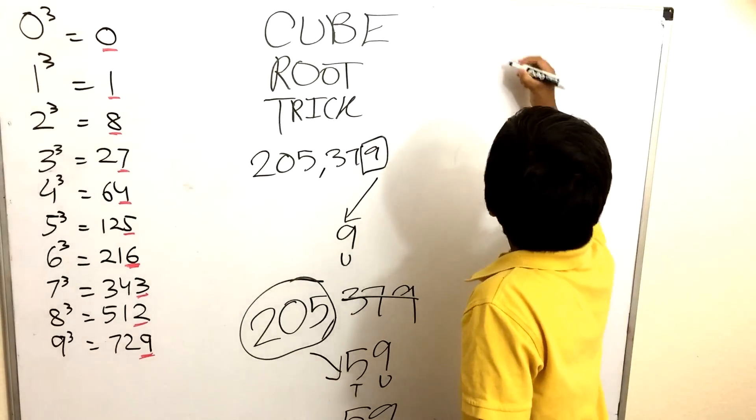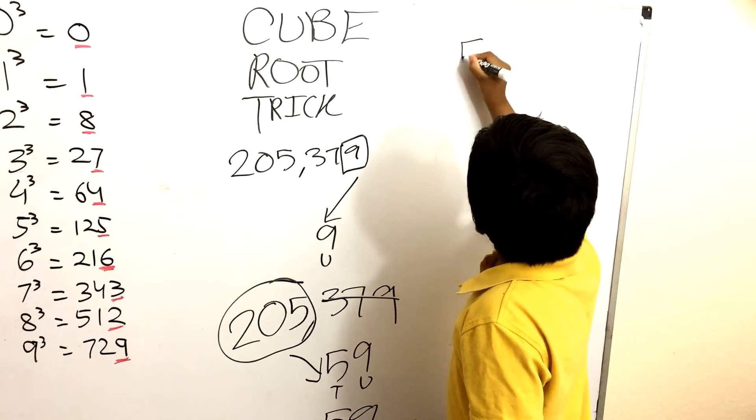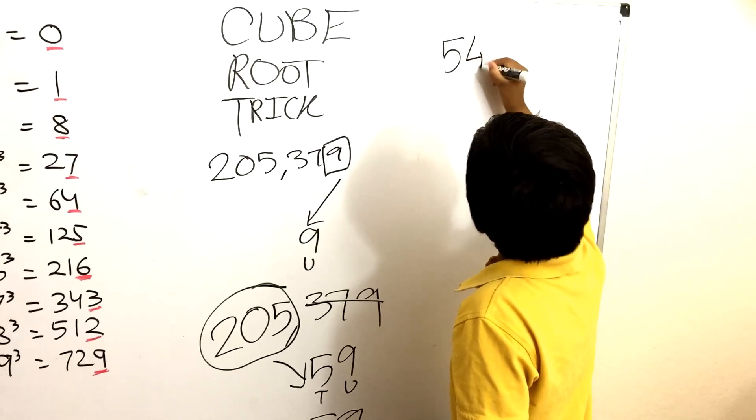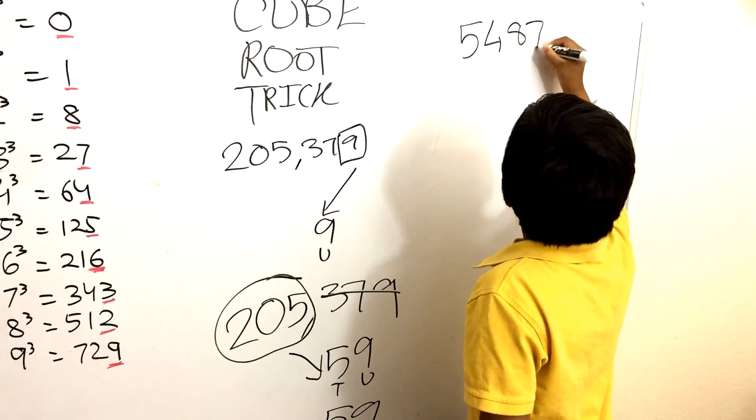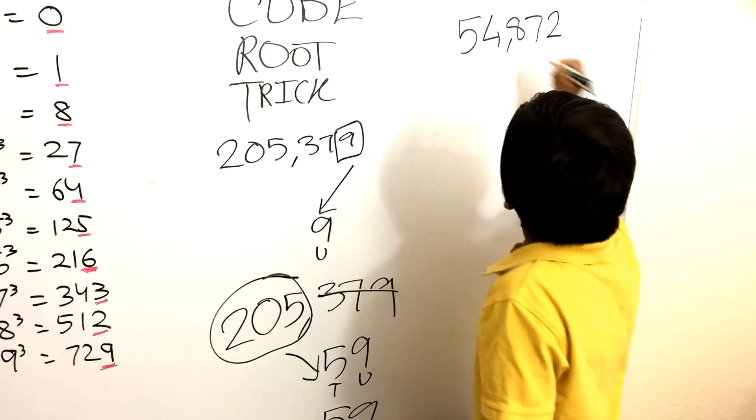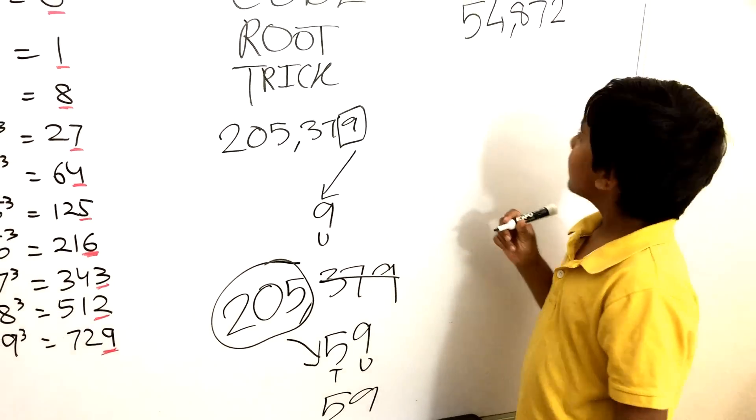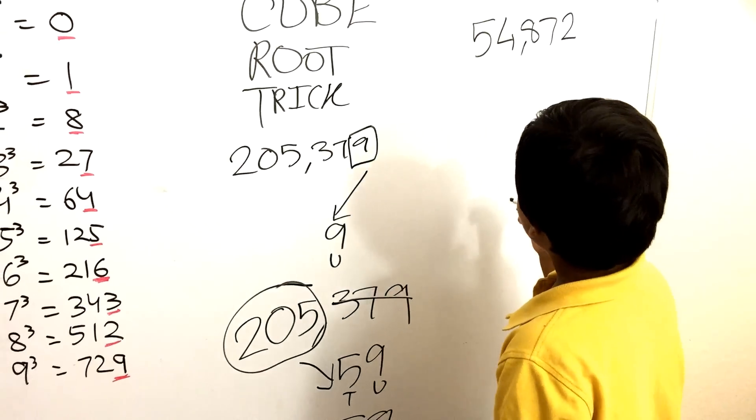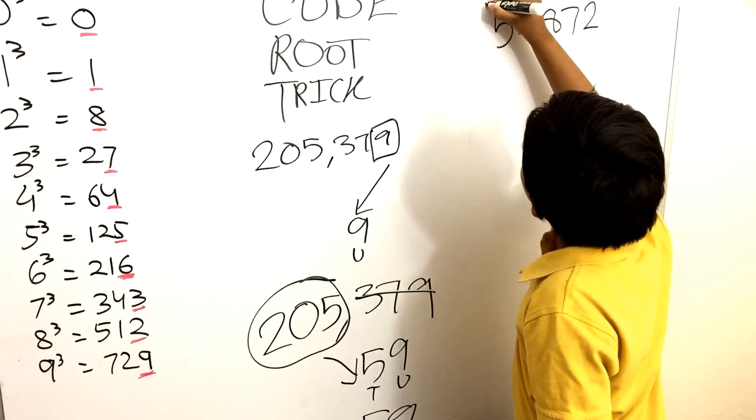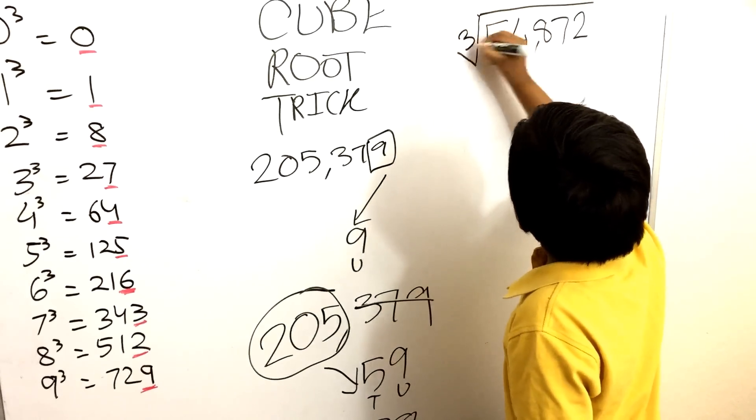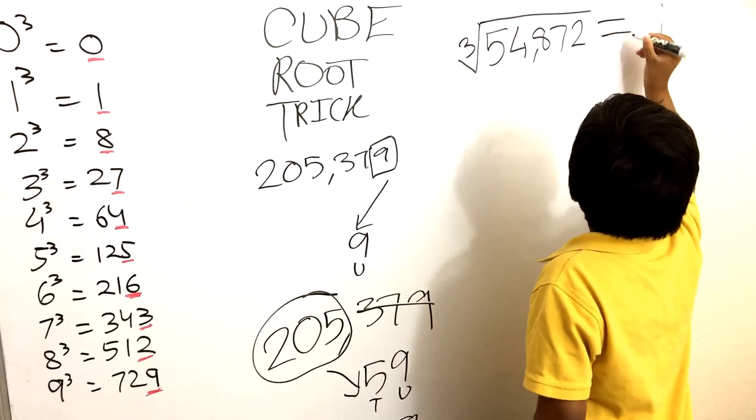5, 4, 8, 7, 2. 54,872. Okay. That's your number, right? Yeah. Okay. Let's see. I will do the cube root.